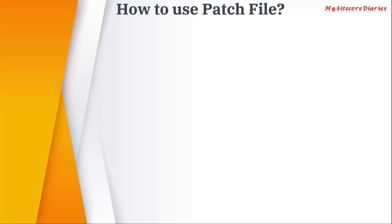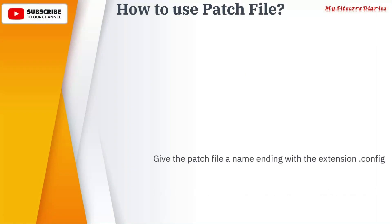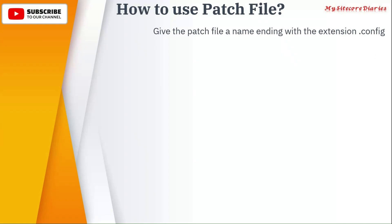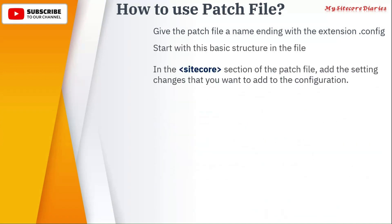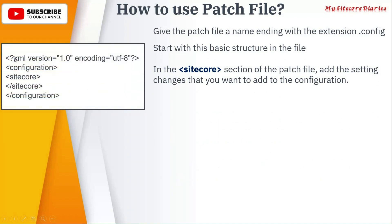How to use patch files. Whenever you are creating a patch, when the extension will be .config, you have to start with the basic structure in the file. As you can see in the example here, you use XML version and then configuration. In the sitecore section of the patch file, all your changes should go. You can check the existing configuration if you are making any changes — a similar structure should be used. All the configuration which you want to change should go within the sitecore config.